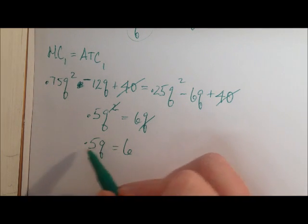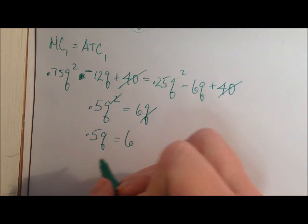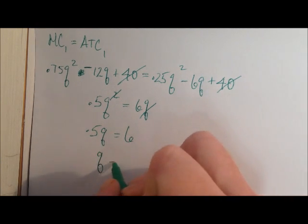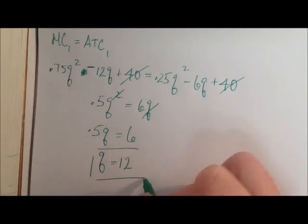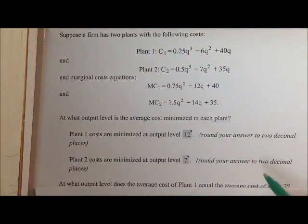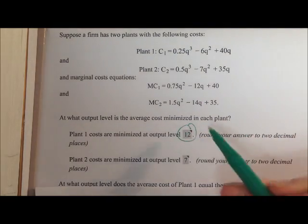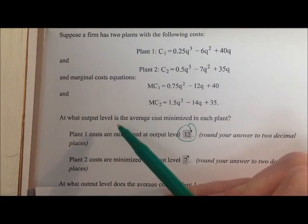And then I just divide both sides by 0.5, or in other words, multiply both sides by 2, and I find that Q is equal to 12. And that would be the answer to this first part of the problem. 12 is the quantity that minimizes the average total cost at plant 1.